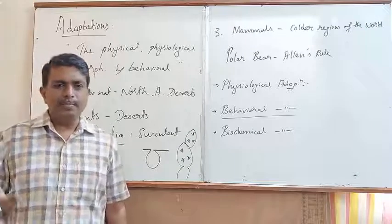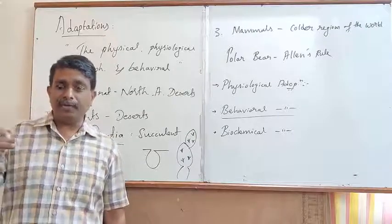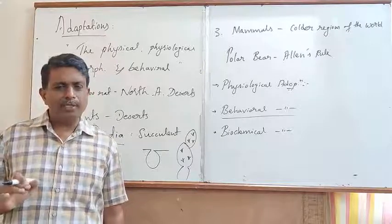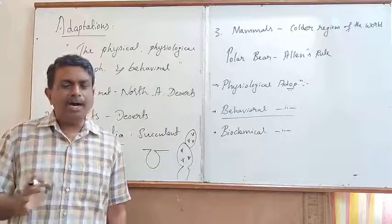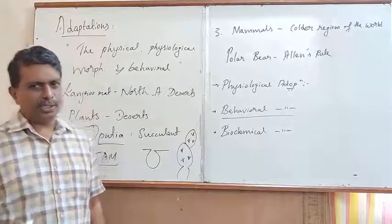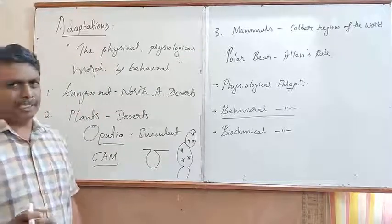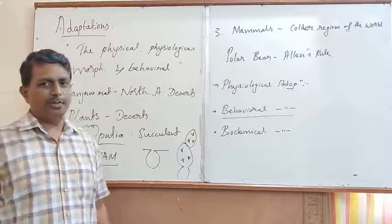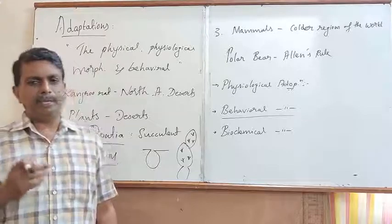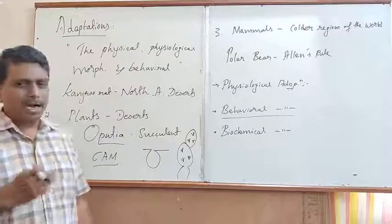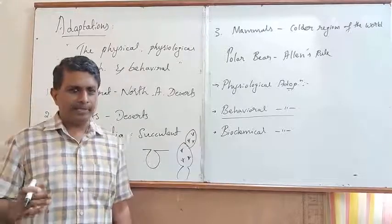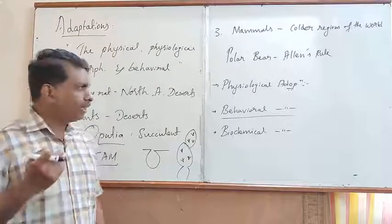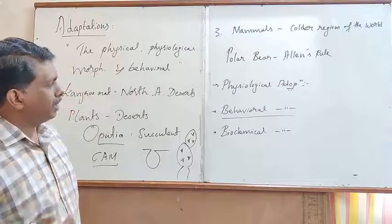In addition to this, the majority of fishes survive in the cold climatic regions of the world, even at sub-zero levels. In the Antarctic zone, you can find the exhibition of fish variety with the exhibition of biochemical adaptation. These are classical examples in favour of biochemical adaptation, and are the important types of adaptation seen in living organisms.